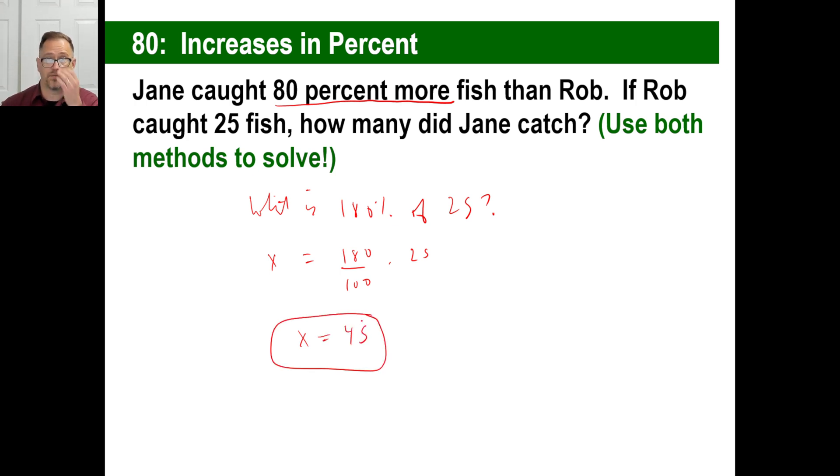If you did the arithmetic, you'd get 45. That's how many fish Jane caught. That's sensible, right? That's more than 25, more than Rob caught, correct? That's what you're looking at.